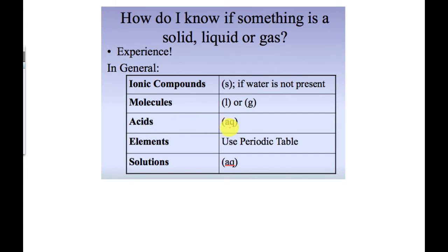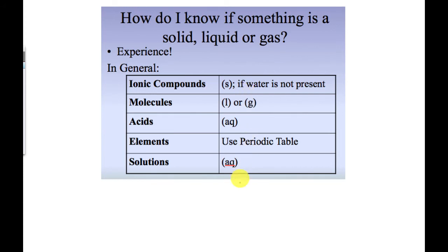For elements, use the periodic table — most are solids, except mercury and bromine which are liquids. Noble gases, chlorine, bromine, and others on the right side are gases. Any solution is always aq. I'll be relaxed on grading states of matter — I'm more concerned that you're attempting to use them. If I'm going to take points off for an incorrect state of matter, I'll specifically tell you.